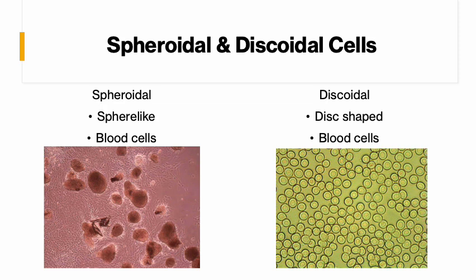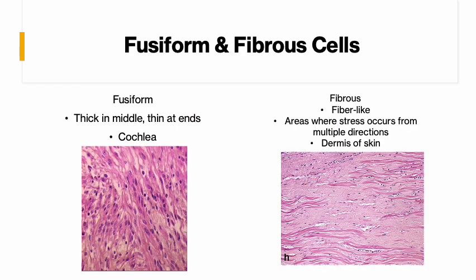It's easy to differentiate between spheroidal and discoidal blood cells. When blood cells are not disc-shaped, there's usually a problem in carrying oxygen — disc is the way it should be; that's the most effective shape. The fusiform cells are thick in the middle and thin at the ends, and these can be found in the cochlea of the ear. The fibrous ones are fiber-like, usually in areas where they can be stretched from either direction. These are usually found in the dermis of the skin — the middle layer — being pulled by the top and bottom layers on both sides.